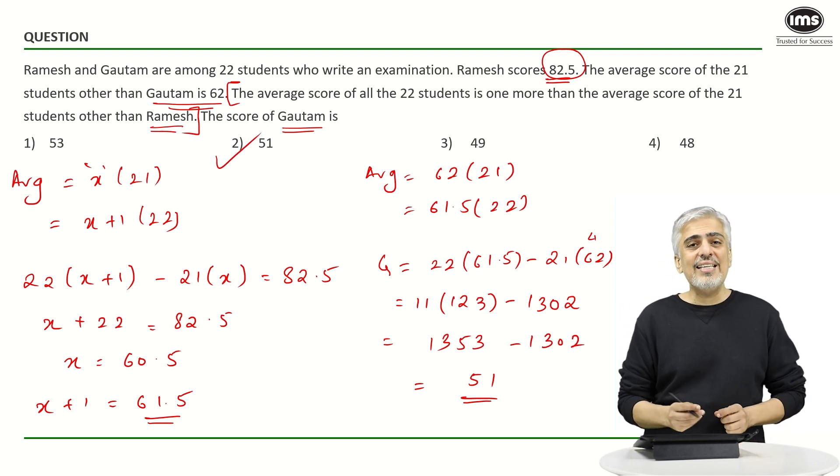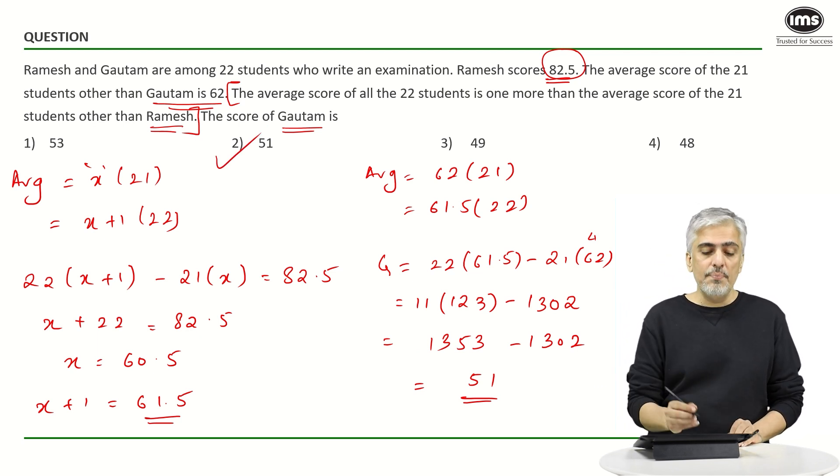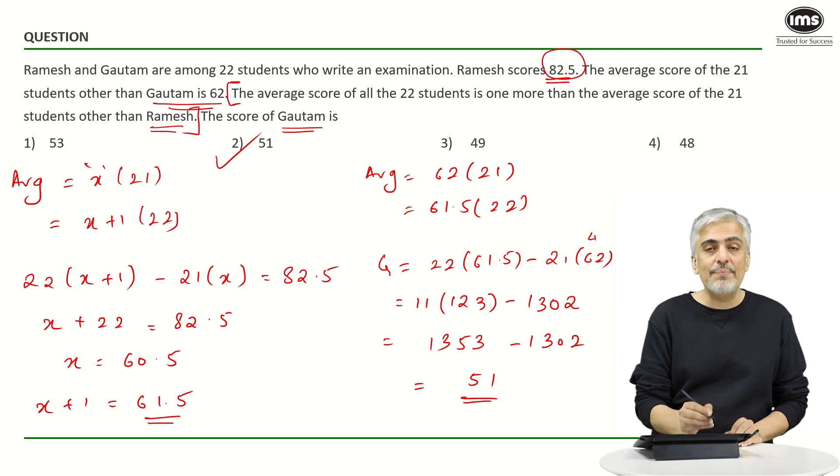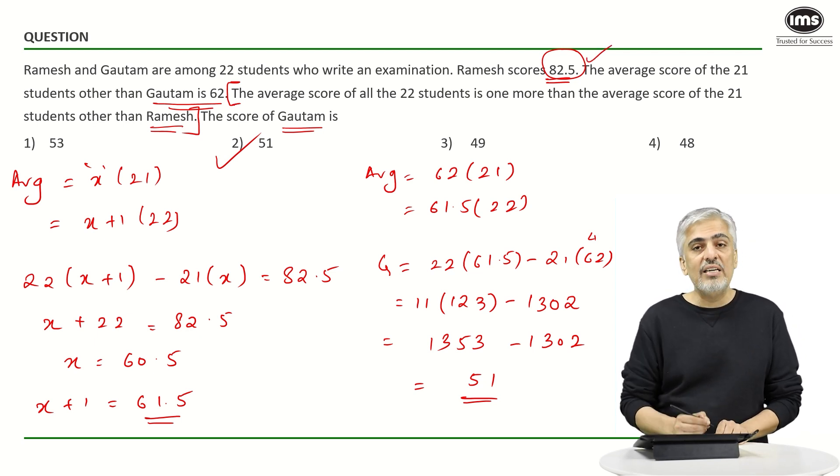Let's multiply 11 into 123, that is 33, 22 plus 3, 5, 2, 13, 1, 3, 5, 3 minus 1, 3, 0, 2, which is 51. 51 is Gautam's score which is the second option. As I had said, it was not a very easy question to understand first. The most important part was to use the second statement earlier than the first statement. That was because Ramesh's score was available and also the calculation was slightly difficult.